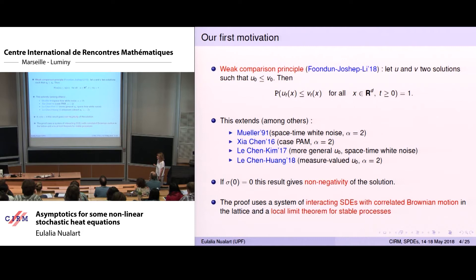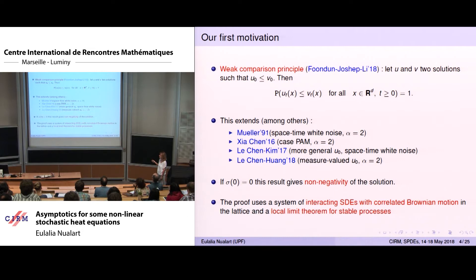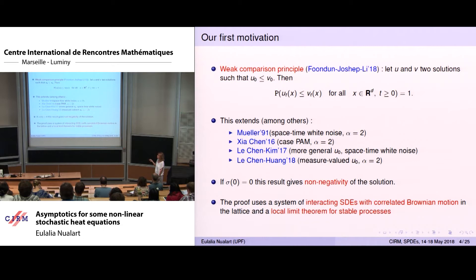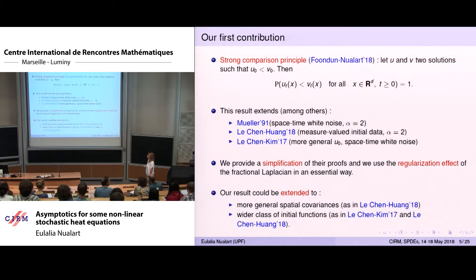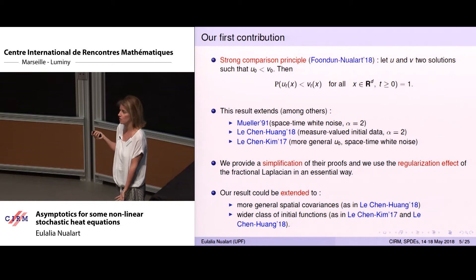There have been many comparison principles for this type of equation. The first well-known is Mueller, for space-time white noise with alpha equal to two. Chia Chen has a weak comparison principle for the parabolic Anderson model with alpha equal to two. Mueller's approach was extended by Le Chen and Kim for more general initial conditions and space-time white noise, and later by Le Chen and Wan for measure-valued initial conditions with alpha equal to two. In most of these papers the weak comparison principle is actually a strong comparison principle, meaning the inequalities are strict.